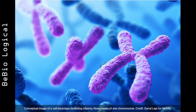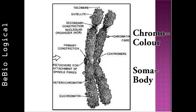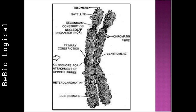Strassburger in 1875 first discovered thread-like structures which appeared during cell division. These thread-like structures were called chromosomes due to their affinity for basic dyes. The term chromosome is derived from two Greek words: chrome means color and soma means body. The term was first used by Waldeyer in 1888.